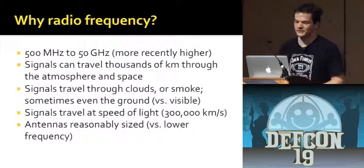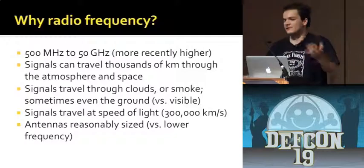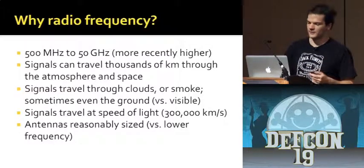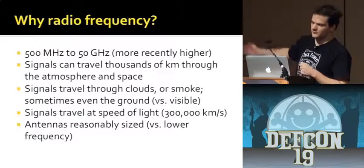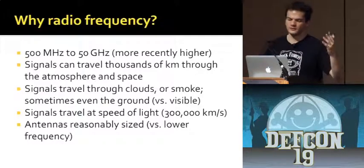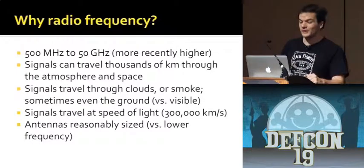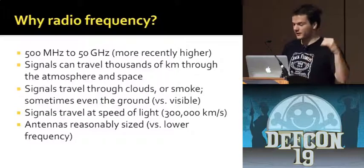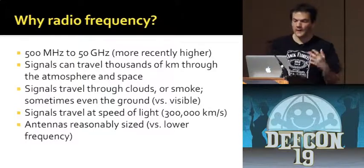Why radio frequency? There are tons of sensing systems that operate from extremely low frequency — tens of kilohertz or even tens of hertz — all the way up to visible light and X-rays. What's special about the RF band, roughly 50 megahertz to 50 gigahertz, is we get pretty good propagation in the atmosphere. We can transmit a signal that runs thousands of miles. It can go through clouds or smoke obscuration, and with certain systems you can even penetrate the ground — that's called ground-penetrating radar.